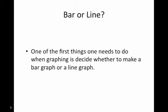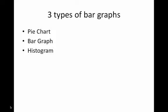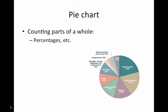The first question you need to ask yourself is: do you need a bar or line graph? Those are pretty much the only two kinds of graphs that there are. You may say, what about a pie graph? Well, a pie graph is just sort of a different kind of bar graph. There are three types of bar graphs: pie charts, bar graphs, and a special kind called histograms.